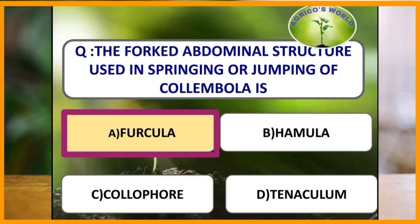In Collembola, the first abdominal segment consists of a bilobed adhesive organ called collophore or gluing organ, which helps in water absorption, whereas the third abdominal segment consists of hamula, the fourth consists of furcula, the springing organ, and the fifth and sixth consist of gonopore and anus respectively.